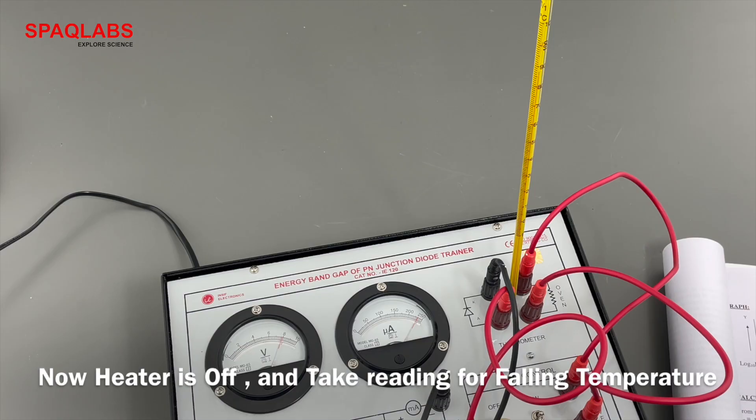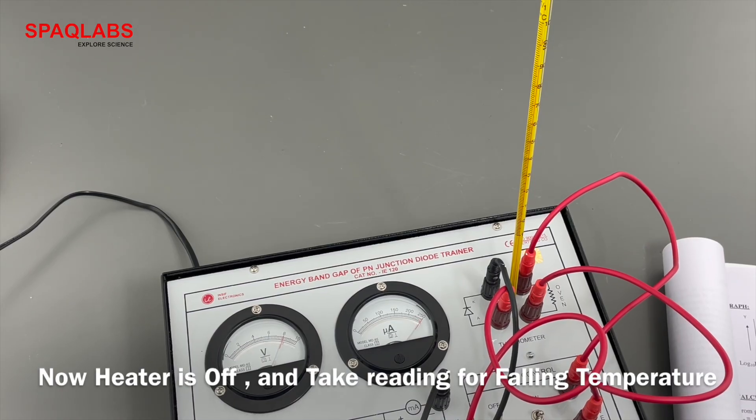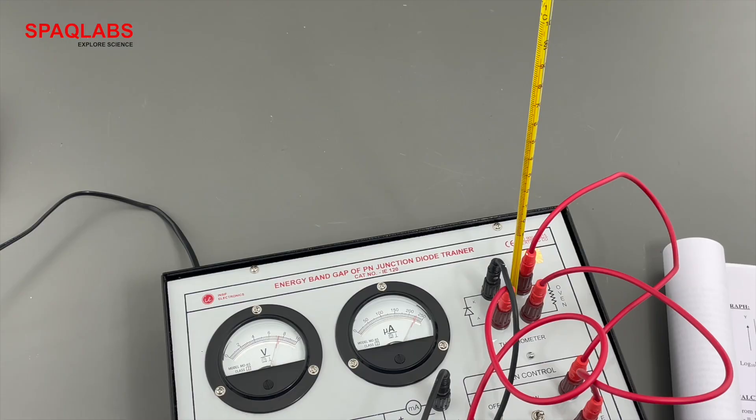As soon as the O1 gets heated to around 100 degrees, turn off the heater and note down the temperature and its corresponding current readings in the table.